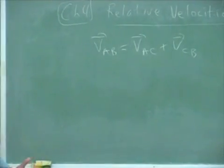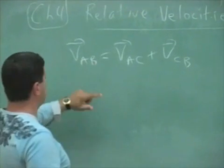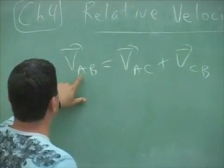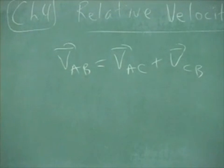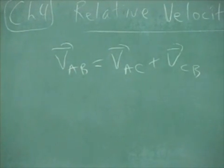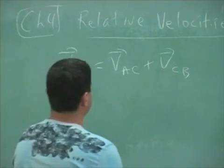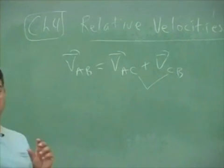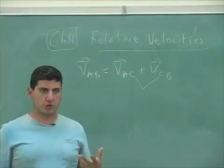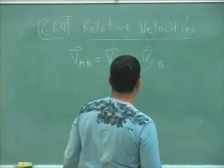Okay, the way that the formula is written is velocity of A, and the way you read this is velocity of A with respect to B equals velocity of A with respect to C plus velocity of C with respect to B. Notice that the two subscripts here, the two inner subscripts have to be the same in order for this to work. So if this is subscript C, this is subscript C, they have to be the same.